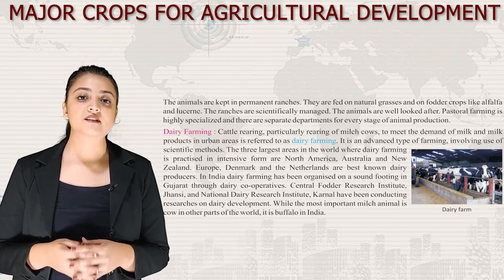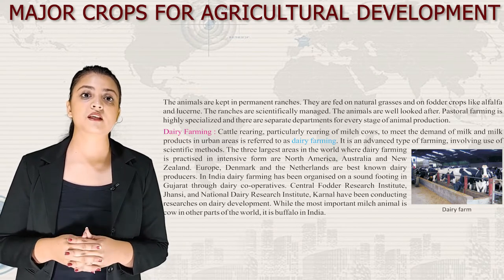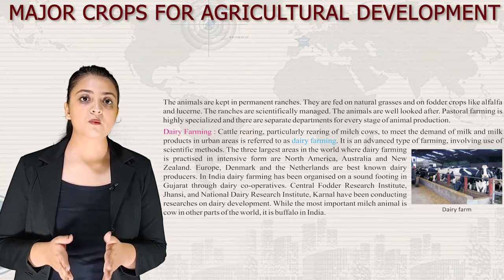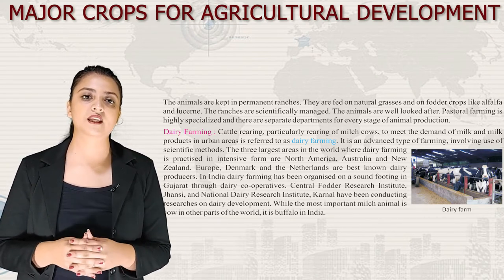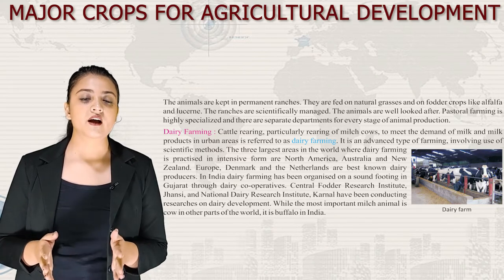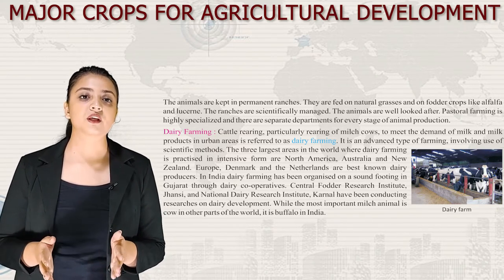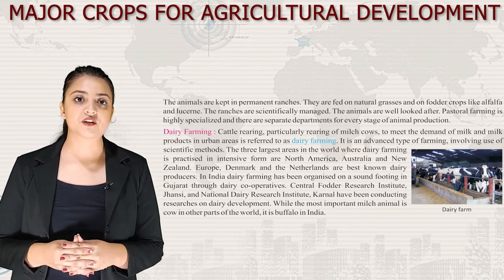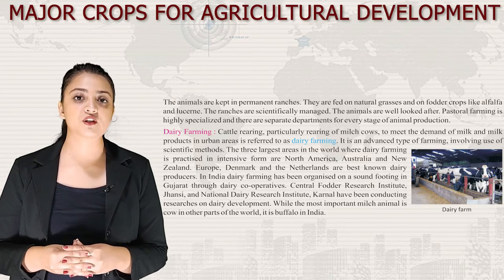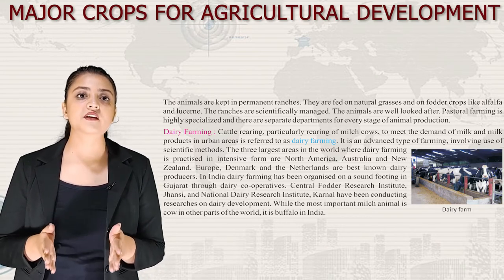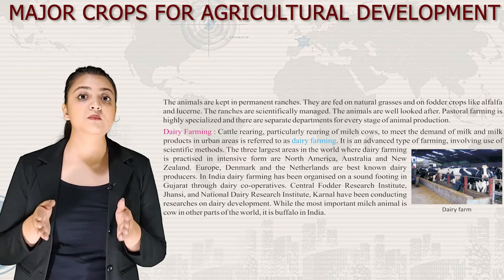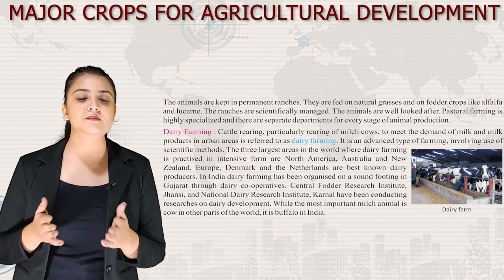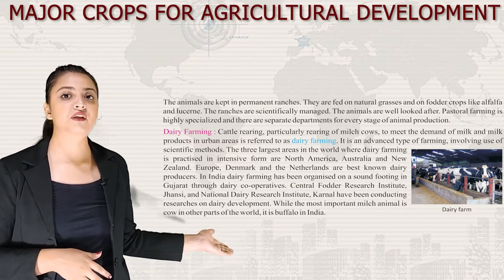The three largest areas where dairy farming is practiced intensively are North America, Australia and New Zealand, and Europe — Denmark and the Netherlands are best known dairy producers. In India, dairy farming has been organized on a sound footing in Gujarat through dairy cooperatives. The Central Fodder Research Institute, Jhansi and National Dairy Research Institute, Karnal have been conducting research on dairy development. While the most important milch animal is the cow in other parts of the world, it is the buffalo in India.